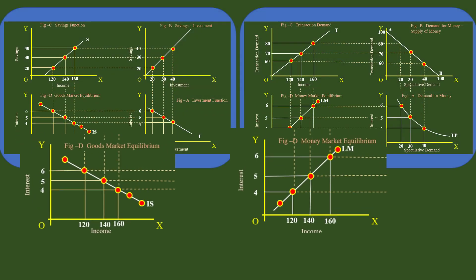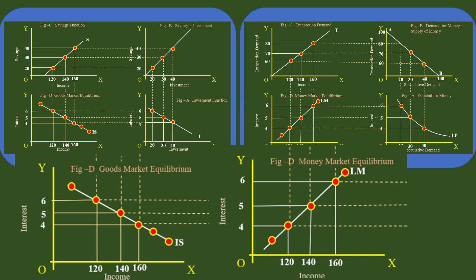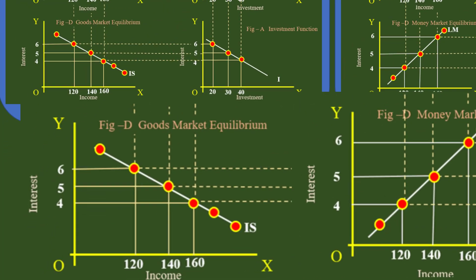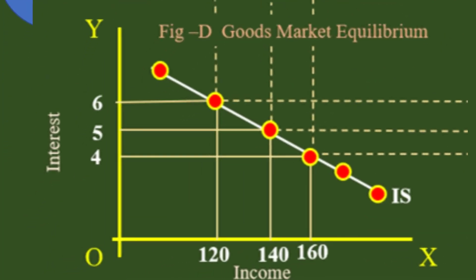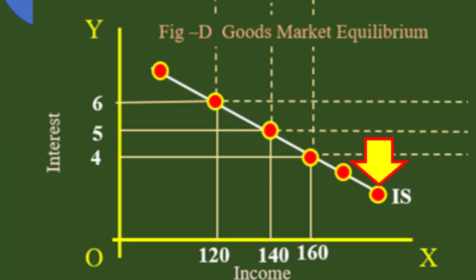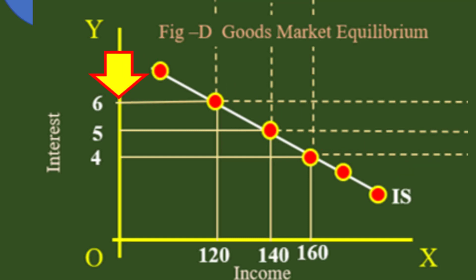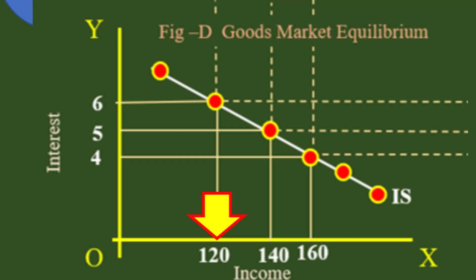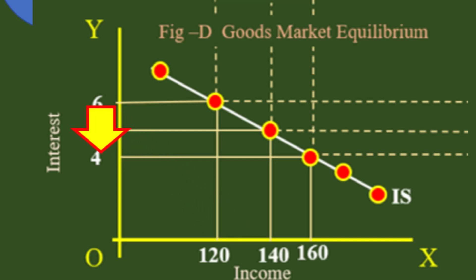We have already derived the IS and LM curves. The IS curve relates interest with income and slopes downward, showing an inverse relation between income and interest. At 6% interest, income level is Rs. 120, and at 4% interest, income is Rs. 160.